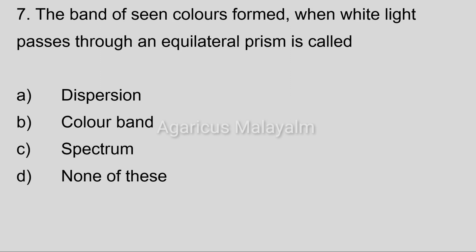Seventh question: The band of seven colors formed when white light passes through an equilateral prism is called? Option A: Dispersion. Option B: Color Band. Option C: Spectrum. Option D: None of these. Correct answer: Option C, Spectrum.